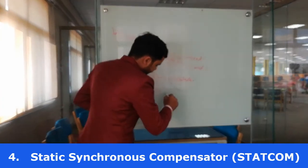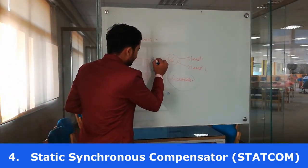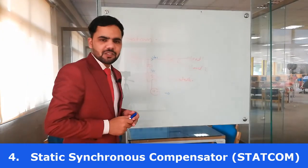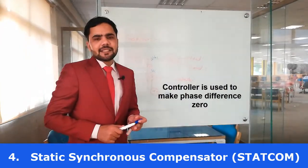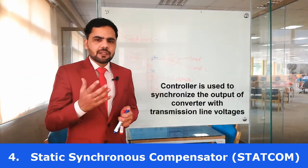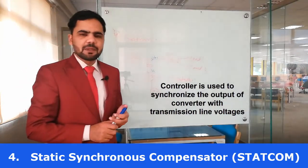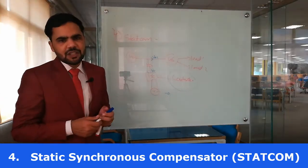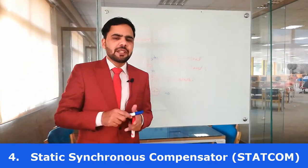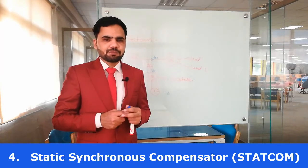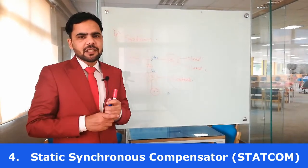The first objective is to make the phase difference between the V output and VAC zero. Another objective is to synchronize the output of the voltage source converter with the VAC. This is important because under varying load conditions or due to losses of the power electronic converters, it may not be as desired. So the two objectives of the controller are to minimize the errors and to synchronize the two voltages.